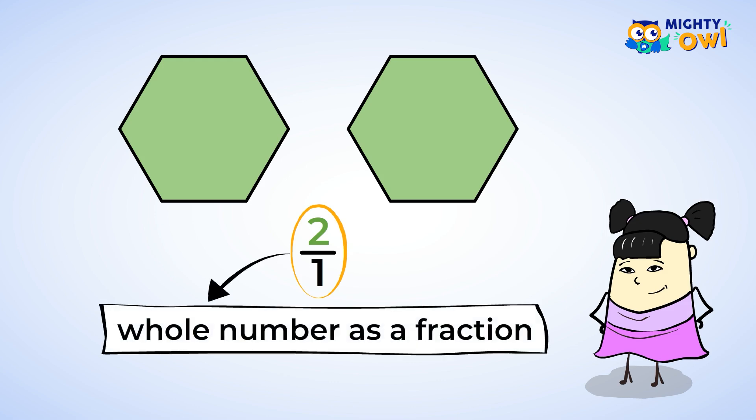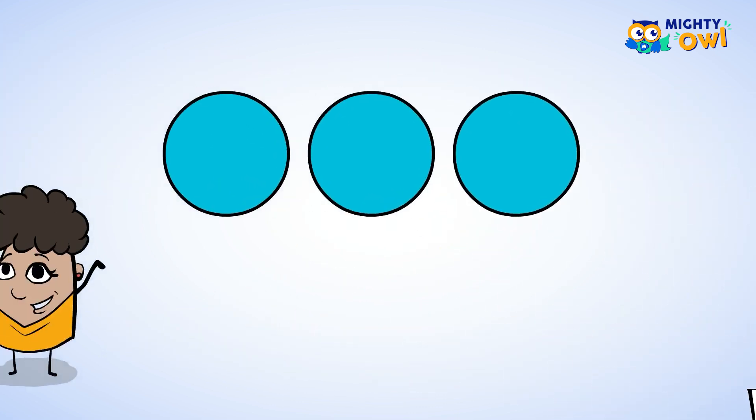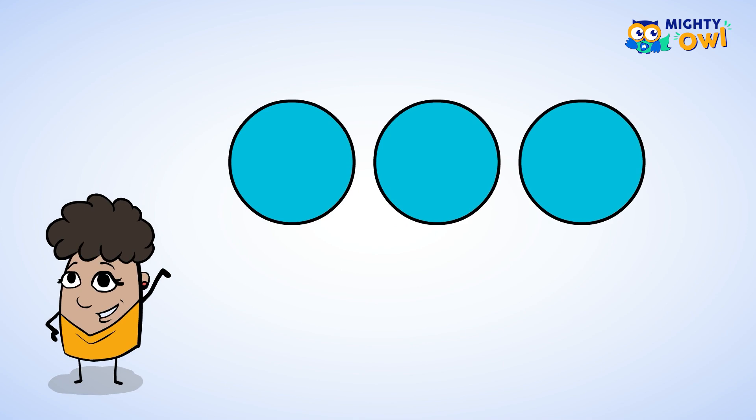Two over one is an example of how we can write a whole number as a fraction. Let's try it again with circles. Here we have three circles. Each circle has one part shaded out of one.